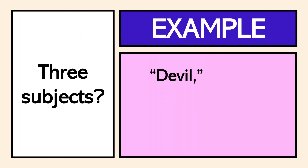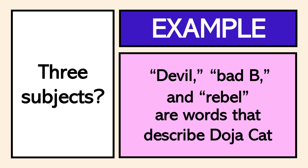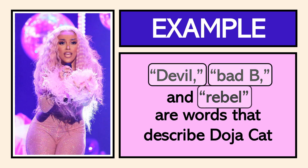Let us assume that we have three subjects: 'Devil, Bad Bee, and Rebel are words that describe Doja Cat.' In this context, you see we have three subjects — Devil, Bad Bee, and Rebel — and collectively they are words that describe Doja Cat. This sentence could be inverted to make it a little easier to read, but with three simple items the reader can still process it.